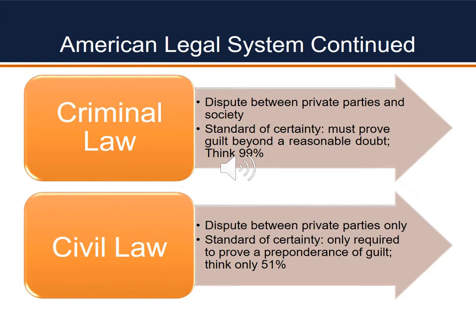Although restitution may be paid to the victims of the crime, it's not typical — you see that more typically under civil law. Civil law is a dispute between two private parties. There's a plaintiff and a defendant, and the body of state and federal law that pertains to civil or private rights is enforced by civil actions. In a civil trial, the plaintiff only has to show a preponderance of evidence, or a greater amount, that the defendant is liable. The burden of proof in a criminal trial requires beyond a reasonable doubt, whereas in civil law think 51% — the defendant need only be found 51% responsible.